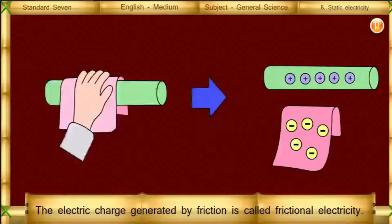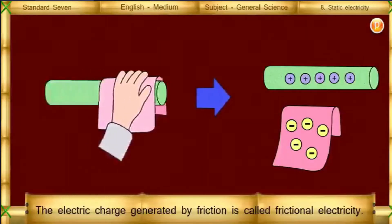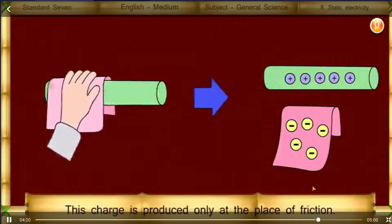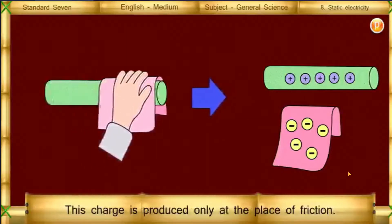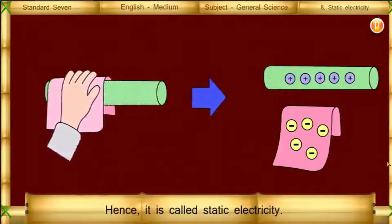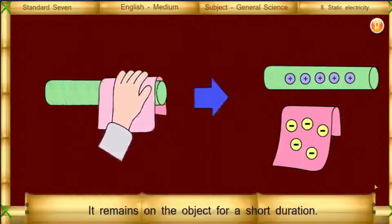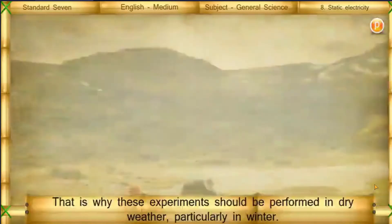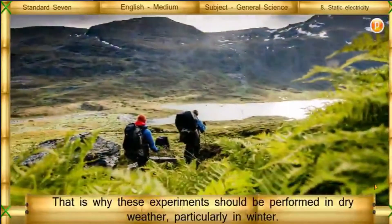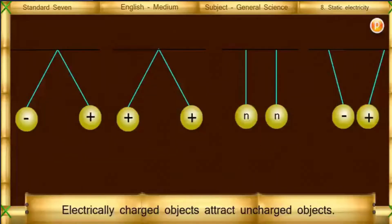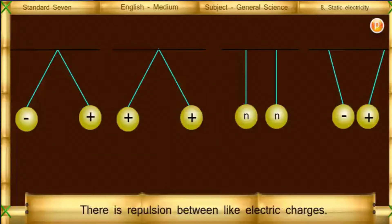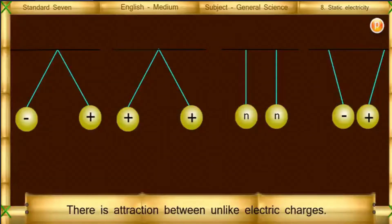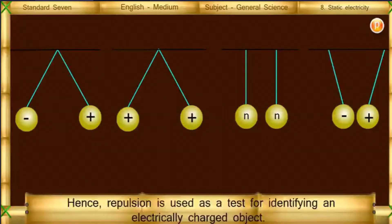Frictional electricity: the electric charge generated by friction is called frictional electricity. This charge is produced only at the place of friction, hence it is called static electricity. It remains on the object for a short duration, and the charges of static electricity are absorbed in moist air. That is why these experiments should be performed in dry weather, particularly in winter. Electrically charged objects attract uncharged objects. There is repulsion between like electric charges and attraction between unlike electric charges. Hence, repulsion is used as a test for identifying an electrically charged object.